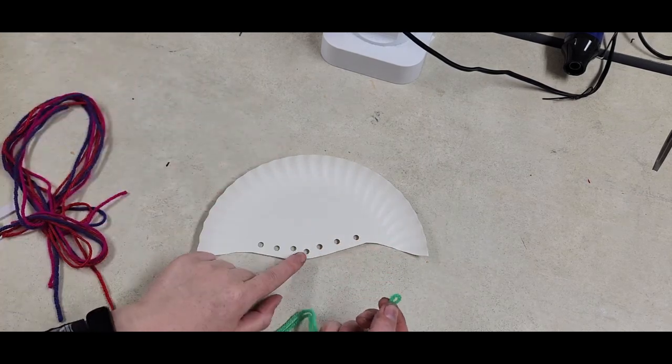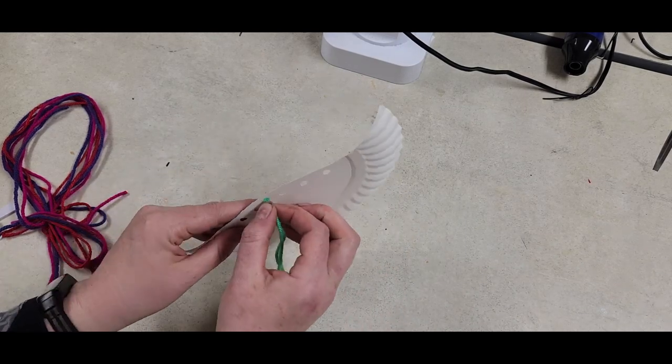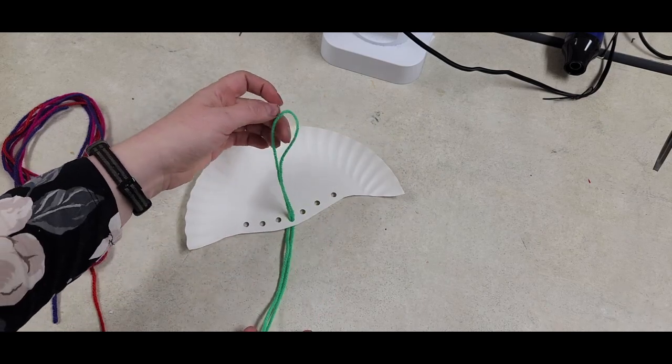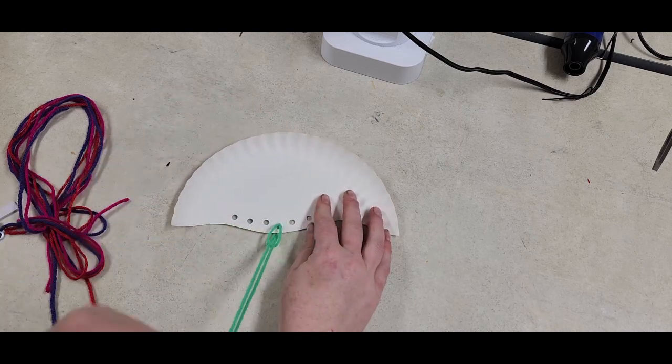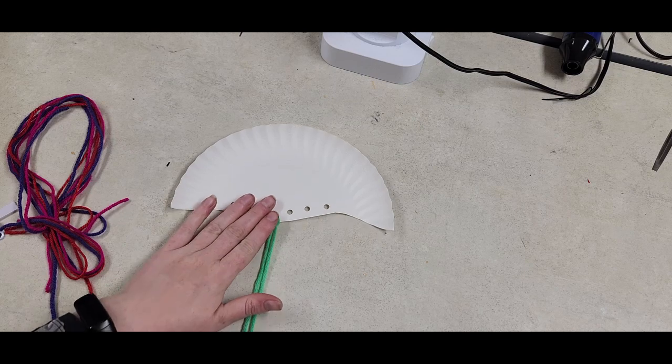I'm going to take this loop and stick it through one of my holes. If you pinch it close, it should pop right through without much fuss. Before I pull it all the way through, I'm going to open my loop and then tuck my tails through and pull tight, and your jellyfish tentacles should be attached.